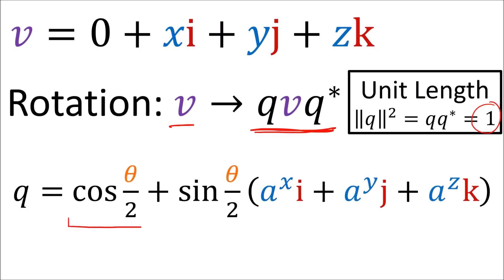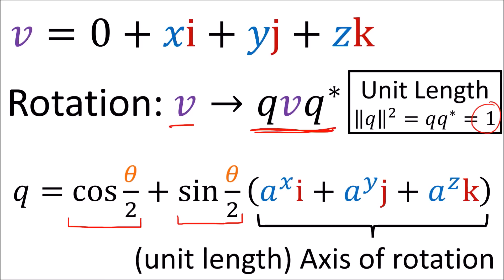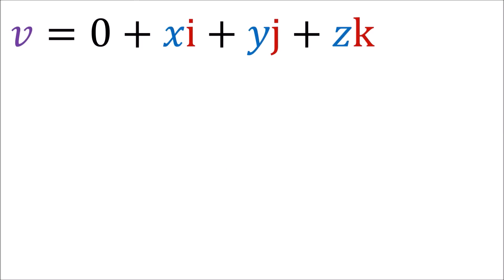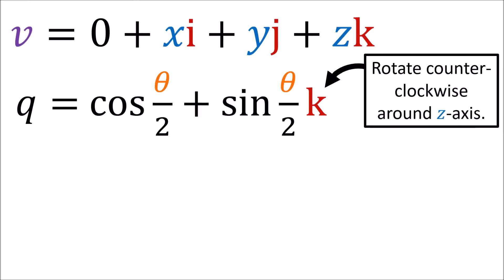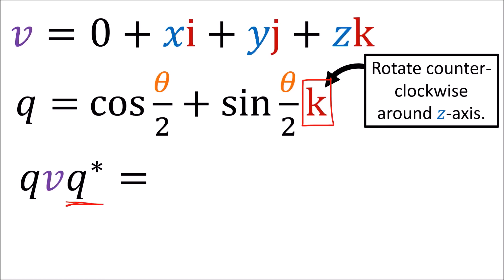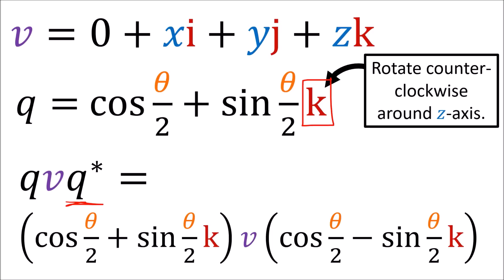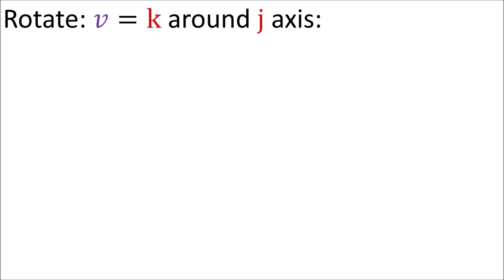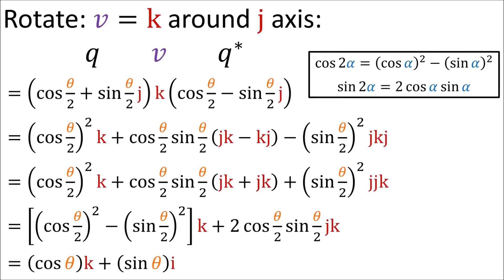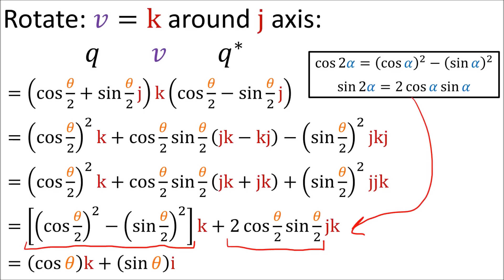The real part of q is cosine theta over 2, and the imaginary part is sine theta over 2 times the axis of rotation. For example, if we want to rotate counterclockwise around the z-axis, we set the axis of rotation to k. For the q* on the right, we take the quaternion's conjugate, which means reversing the signs of the imaginary units i, j, k. Here's a worked example of rotating the vector k around the j-axis by an angle theta. Using some basic trig identities, we end up with a vector that lives in the ik plane rotating from the starting k-axis by an angle theta.